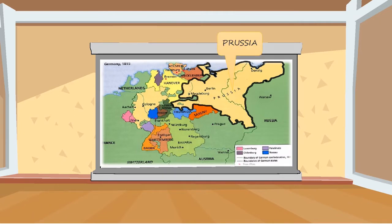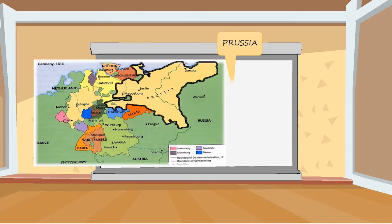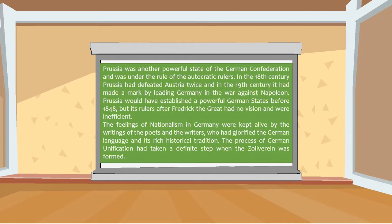Prussia was another powerful state of the German Confederation and was under the rule of autocratic rulers. In the 18th century, Prussia had defeated Austria twice, and in the 19th century it had made a mark by leading Germany in the war against Napoleon. Prussia would have established a powerful German state before 1848, but its rulers after Frederick the Great had no vision and were inefficient. The feelings of nationalism in Germany were kept alive by the writings of poets and writers who glorified the German language and its rich historical tradition.